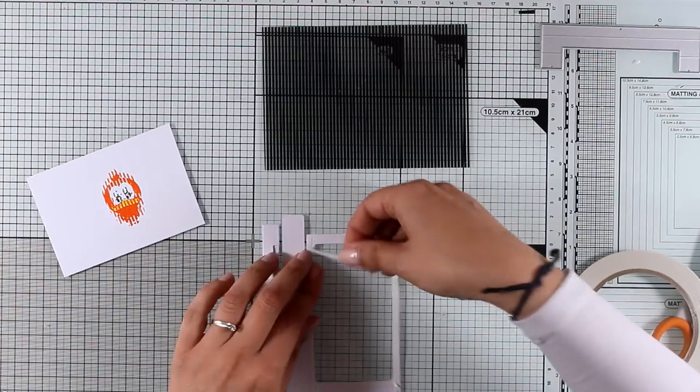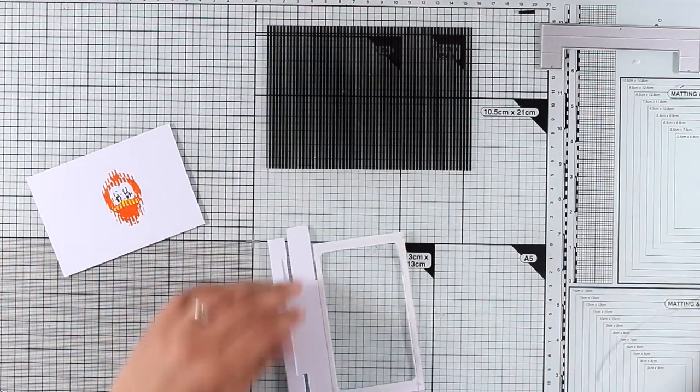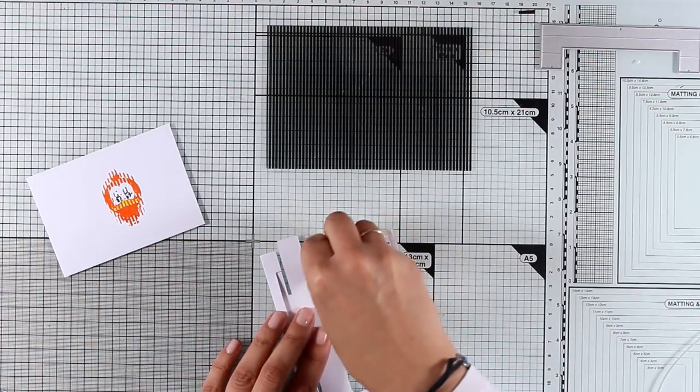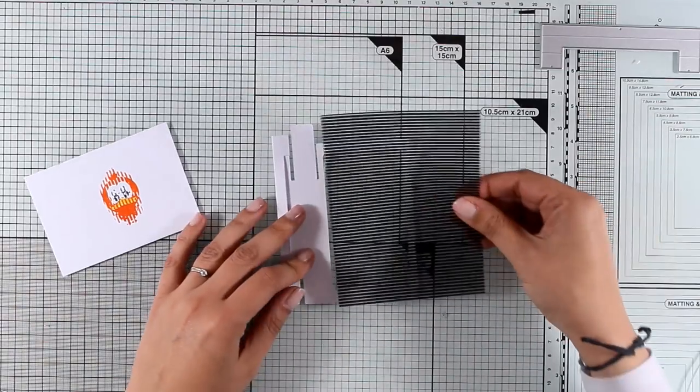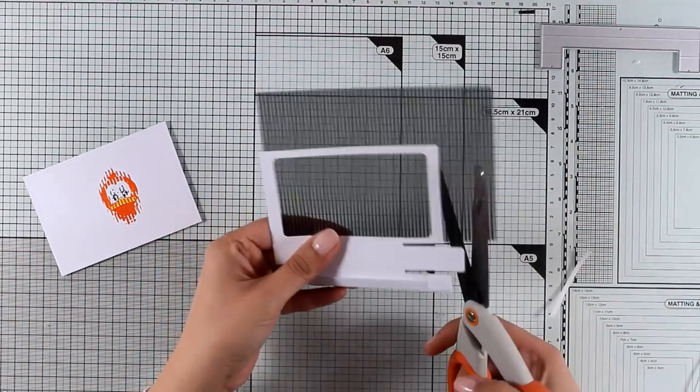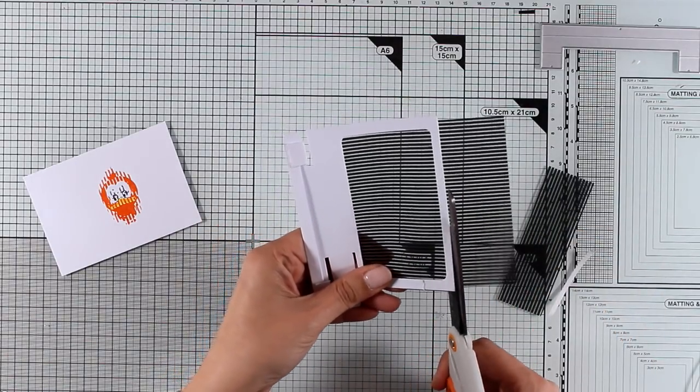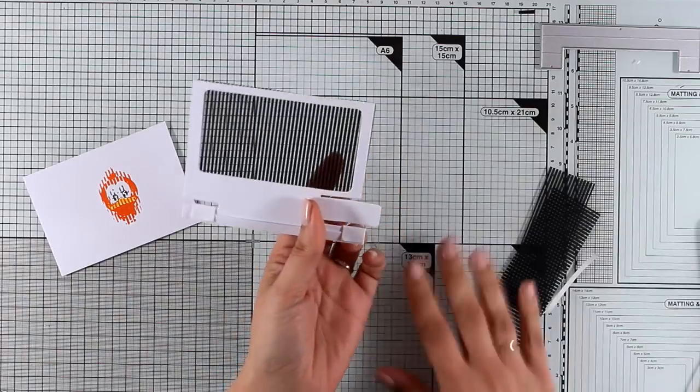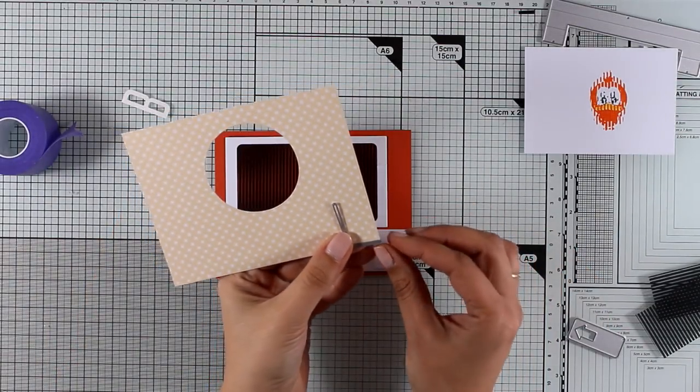Then I'm going to stick the grid on top. Of course, at this stage instead of sticking down the black grid, you have the option of sticking your own grid that you've created with a die or the ones available in different colors. I have a panel here which is standard card size.